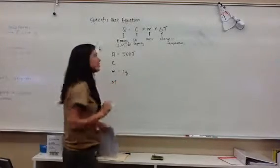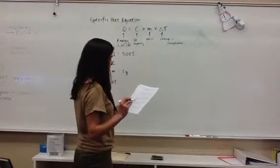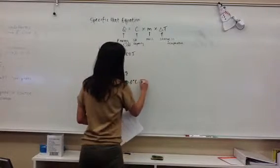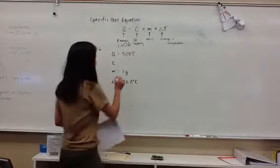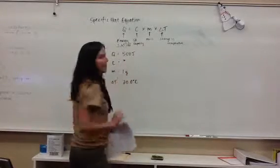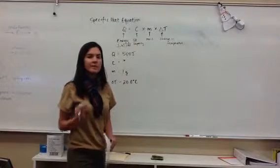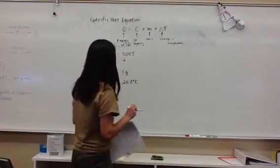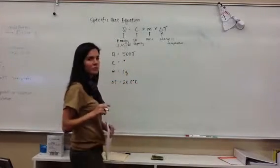Mass is always going to have grams or kilograms. And finally, it says it's heated by 20 degrees Celsius. So, that's going to be the change in temperature. And finally, it asks what is its specific heat capacity. So, as long as we're only missing one of those variables, we can easily solve for this value. We're going to check all of our units. We have an energy unit, a mass unit, and a temperature unit.